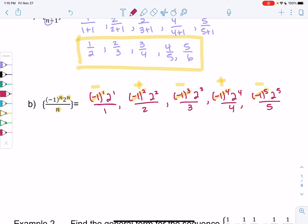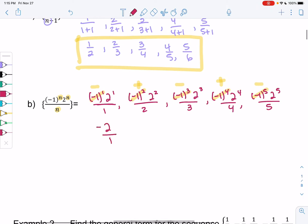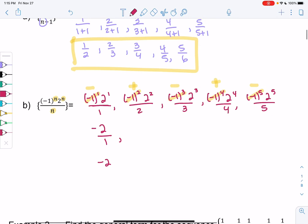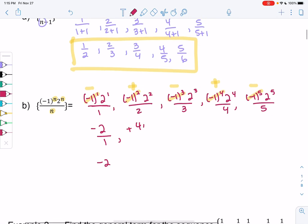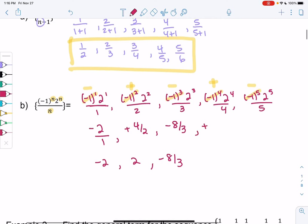And then let's go ahead and do the rest. So we get negative 2 over 1, or negative 2. We get positive 4 over 2, which would be positive 2. We get 2 to the 3rd, which is 8, so negative 8 over 3. That doesn't simplify, so I'll just rewrite it. Next one's positive. We get 2 to the 4th is 16 over 4, or 4. And then 2 to the 5th is 32, so negative 32 over 5 is my 5th term.